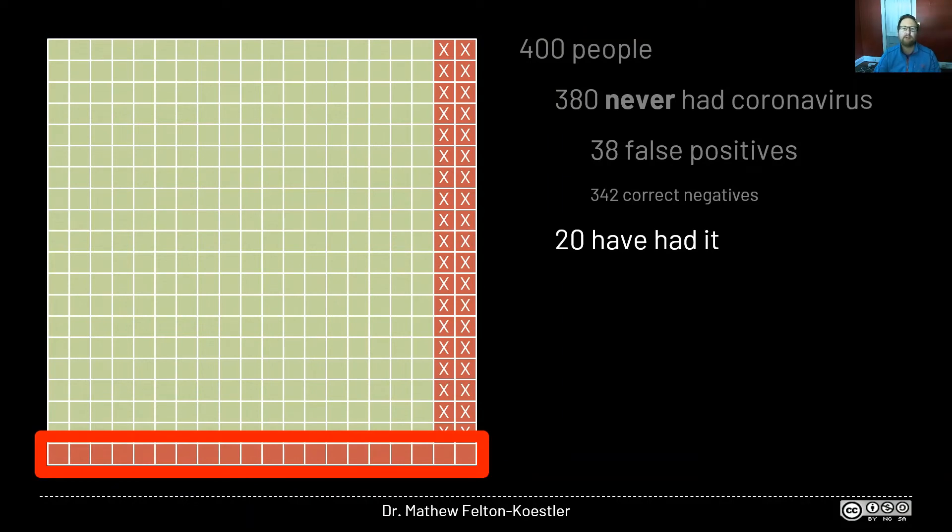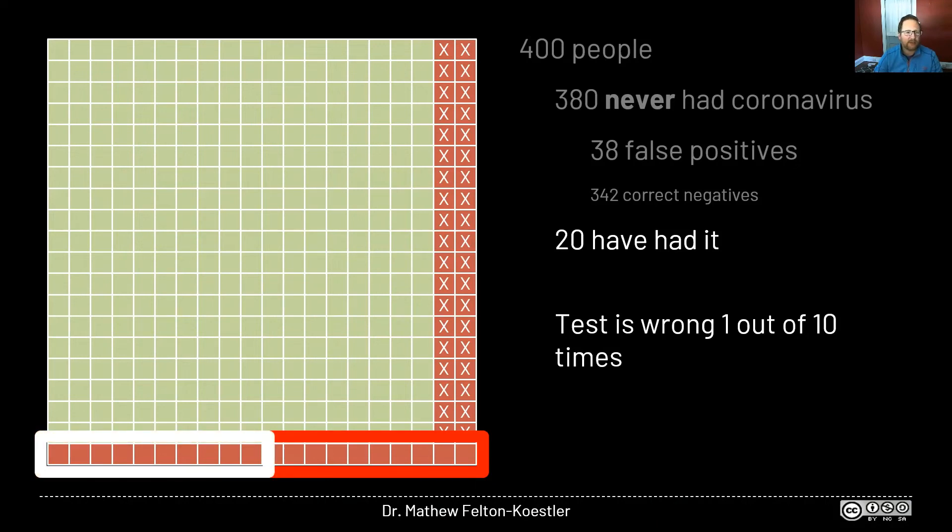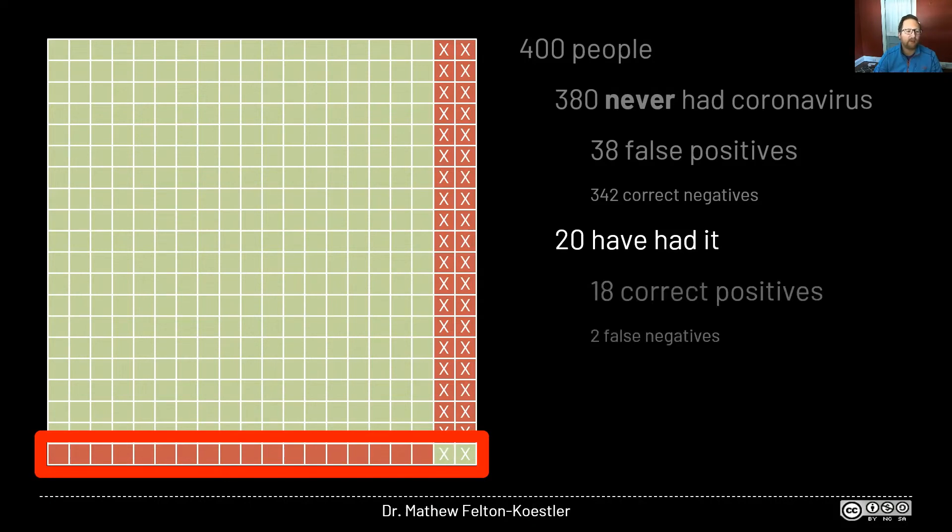All right, now let's look at the 20 people who have had the coronavirus. Remember, the test is wrong one out of 10 times. So if we look at these 10 people, it's going to incorrectly tell us that one of them never had the virus. This is a false negative. And again, if we look at the second group, we're going to get the same thing, one more false negative. So to keep things organized, I'll slide this one over. And so we can see that we have 18 correct positives, the 18 red boxes, and two false negatives, those green boxes with X's in them.